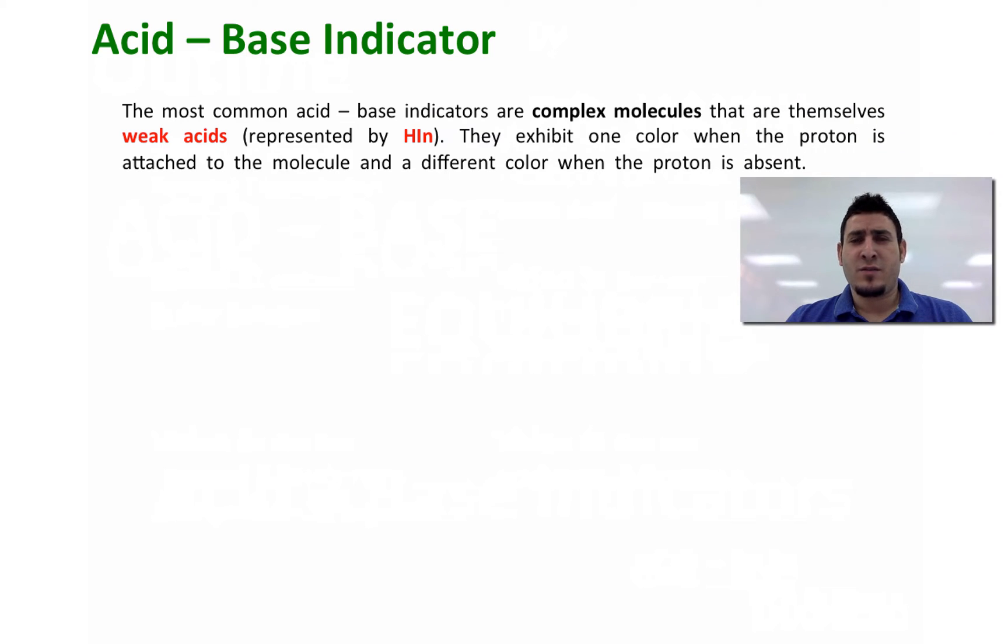Now, acid-base indicators by definition: the most common acid-base indicators are complex molecules that are themselves weak acids, and in this case we will give them the symbol HIn—H for hydrogen, In for indicator.